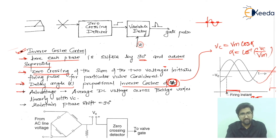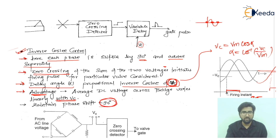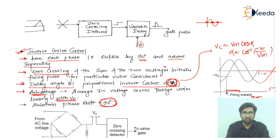The advantage of inverse cosine control is that the average DC voltage across the bridge varies linearly with Vc. It will vary linearly with Vc and ultimately maintain the phase shift by 90 degrees. The connection scheme has Vc plus/minus feeding into the zero crossing detector and then to the valve gate for firing the valve.